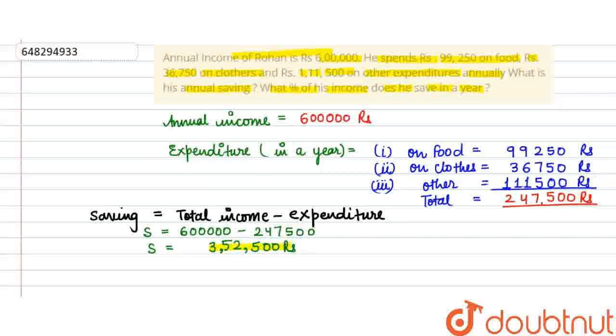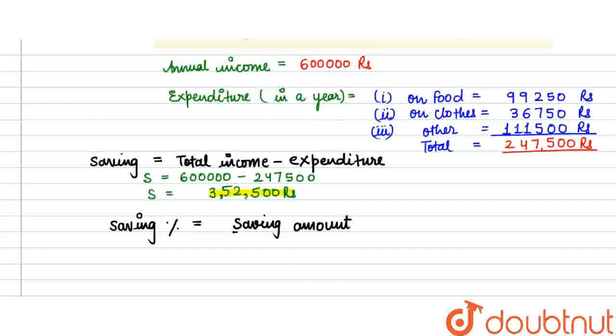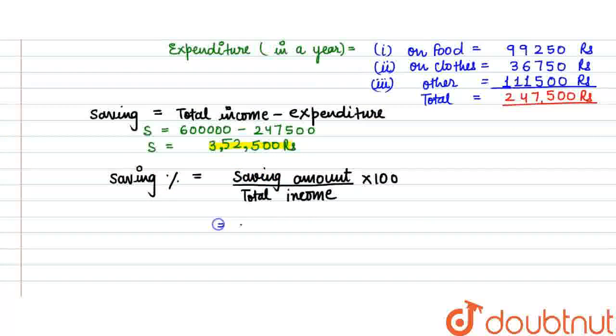Now in the second part of the question, we are asked what percentage he saves. To find the percentage, saving percentage will be equal to saving amount divided by total income, multiplied by 100.